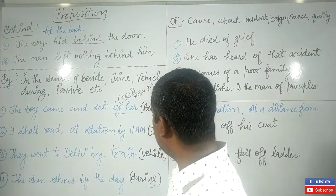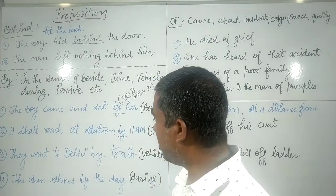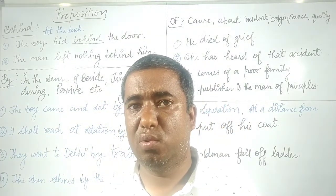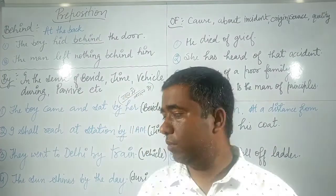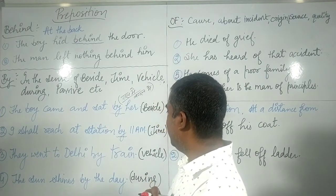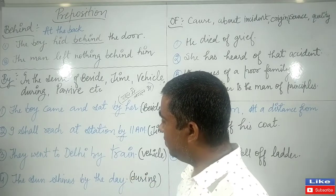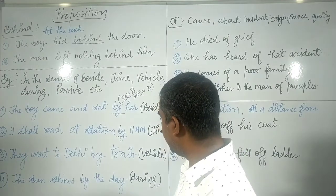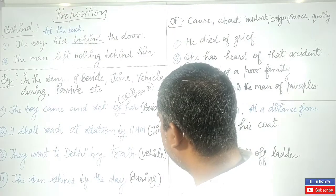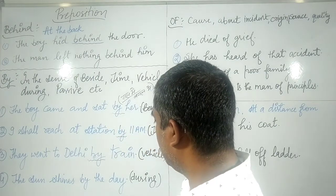Now 'by' is used to show a time boundary. For example: I will reach the station by 11 a.m. — meaning by a certain time, i.e., 'tak' in Hindi. When there is a time bound, 'by' is used in the sense of 'up to that time.' Also, 'by' is used to indicate the means or vehicle: they went to Delhi by train. So when we use any mode of transport, 'by' is used.